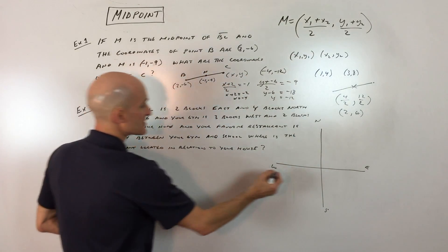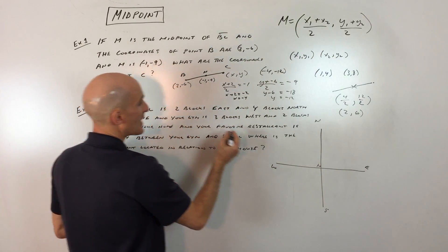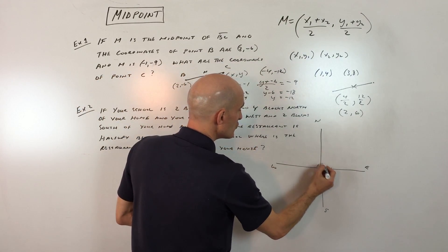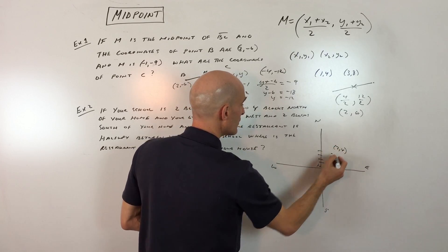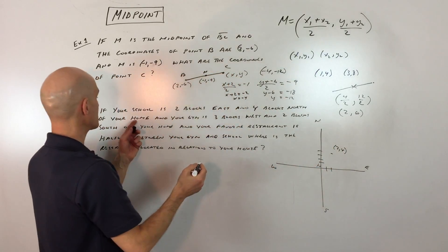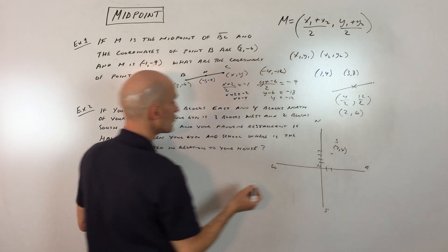Basically, let's say your house is right here at the origin, and you're going 2 blocks east and 4 blocks north. So 2 east and 4 north. There's 2, 4, and that represents your school. So I'll just put S for school.